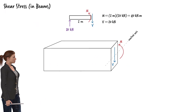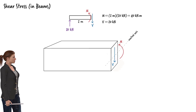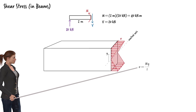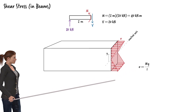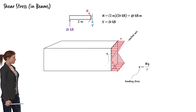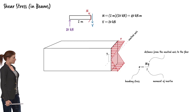Here is a three-dimensional view of the beam segment. In a previous lecture, we showed how the bending moment M produces bending stress at the beam's cross-section, and we derived the equation for the bending stress. In this equation, sigma is the bending stress at a typical beam fiber, Y is the distance from the neutral axis to that fiber, and I is the moment of inertia of the beam's cross-section about the neutral axis.